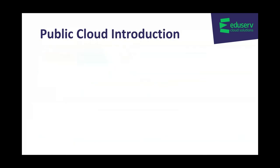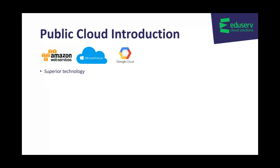In the public cloud market there are three main players. Amazon Web Services, known as AWS, were there first and have the greatest market share. There's also Microsoft Azure and Google Cloud. All of these offer superior technology, so you're running your systems on the same world-class infrastructure as global corporations. They're highly secure, reliable, scalable and offer high performance, global reach, cost optimization, flexible pricing categories and support.